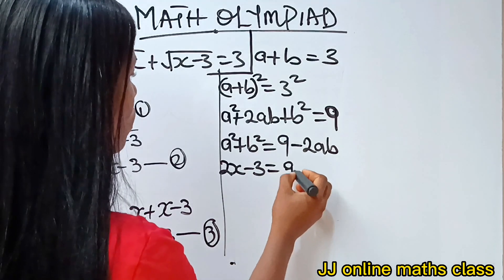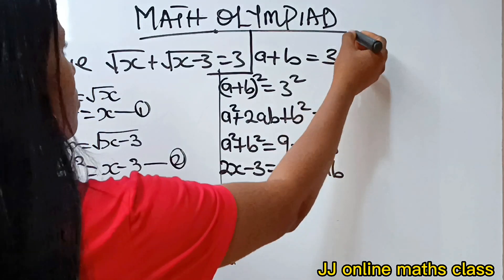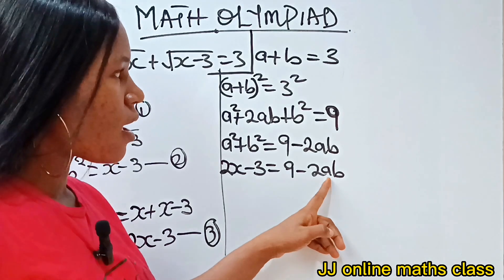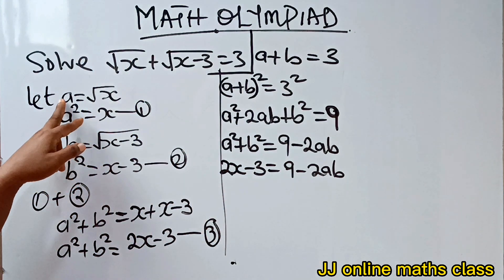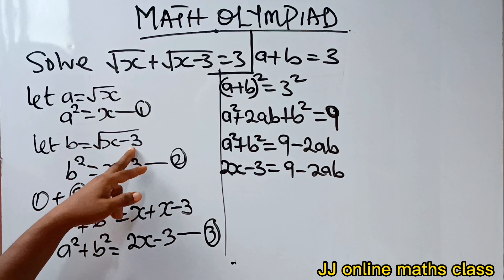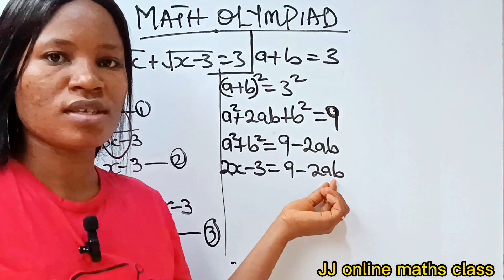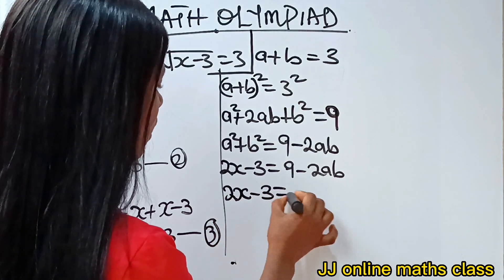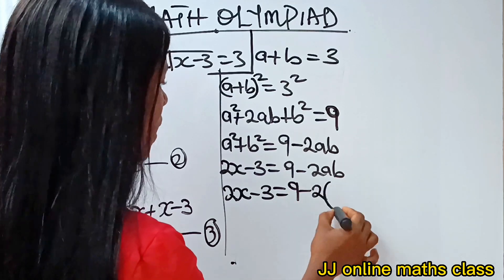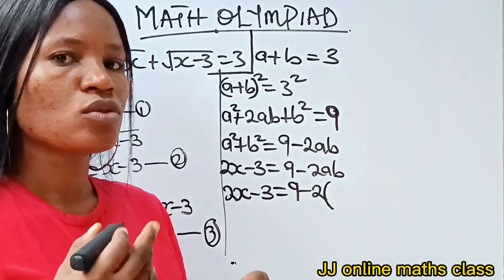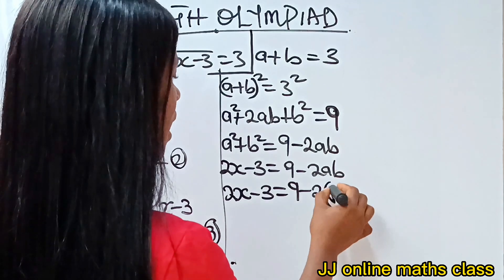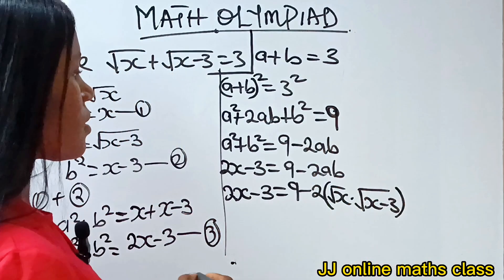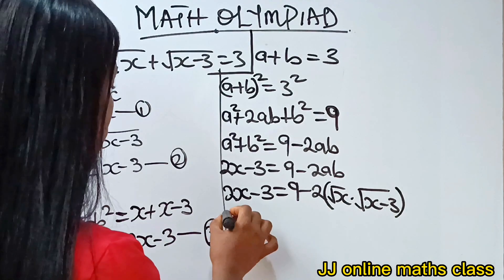Substituting equation three here, we get: 2x − 3 = 9 − 2ab. Now recall a = √x and b = √(x − 3), so let's substitute those in. We have: 2x − 3 = 9 − 2 · √x · √(x − 3).